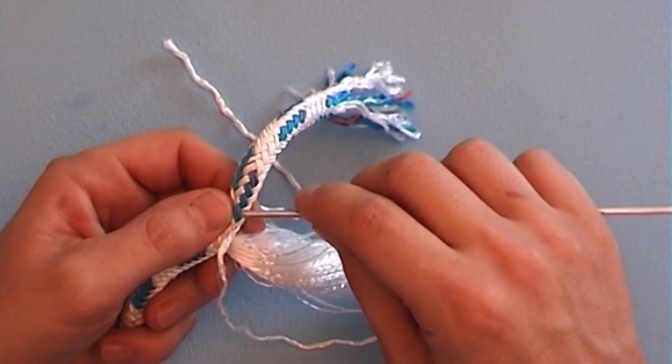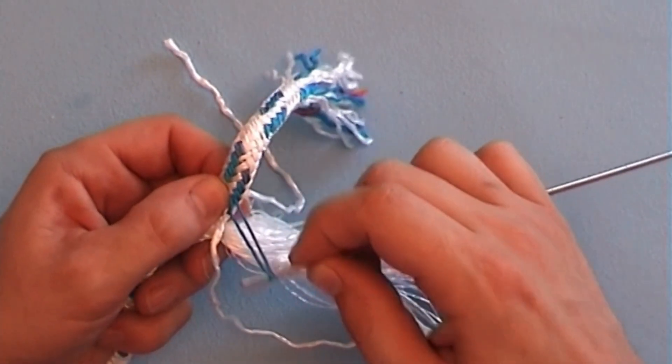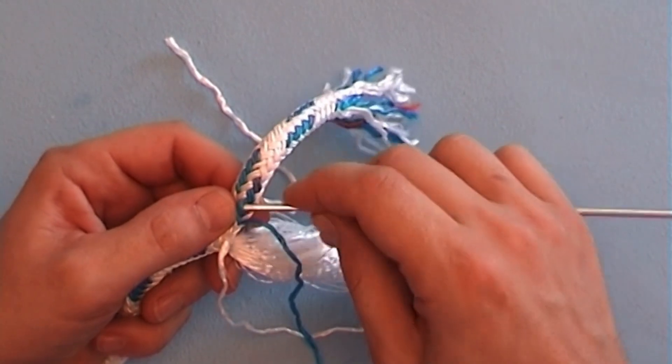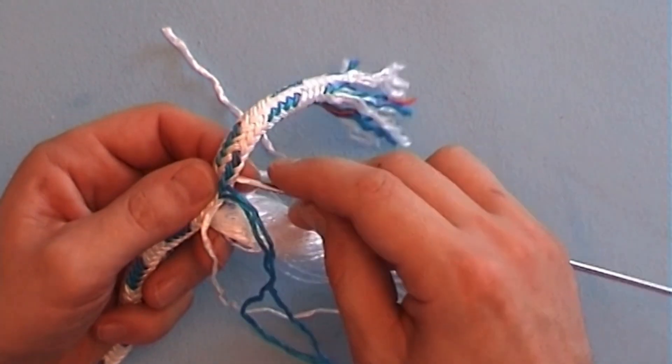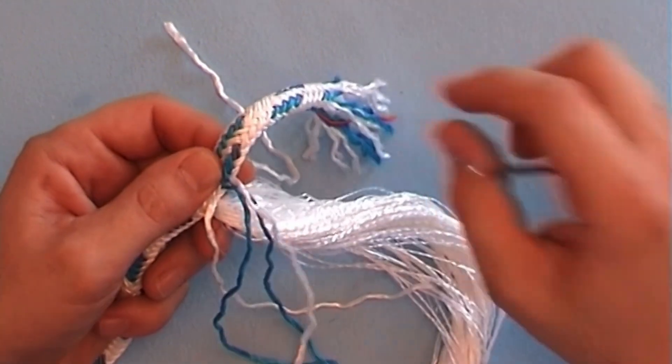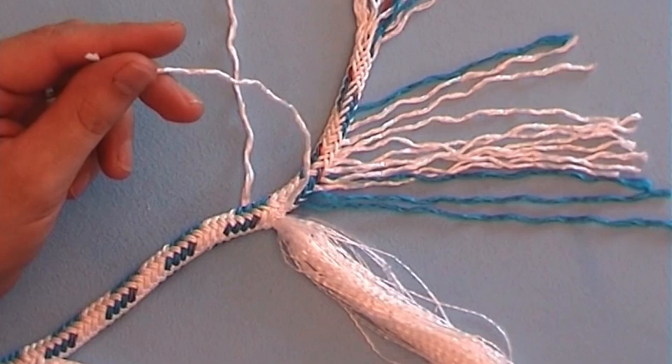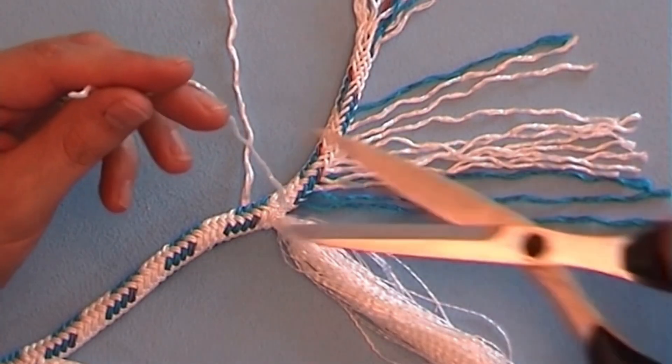Pull half of the yarns out of the cover braid at regular intervals. And then cut them all flush.